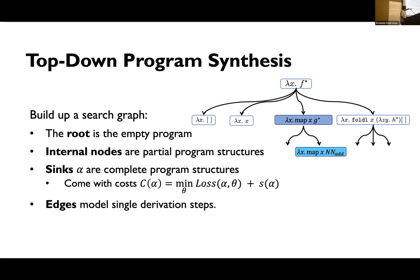In the search tree, internal nodes are partial program structures with holes, and leaf nodes represent complete program structures. For complete programs, you can evaluate the training loss and train the parameters using gradient descent. The edges model individual derivation steps. Your goal is to find a path from the root to a least-cost leaf. Each sub-modification of the program has a unit cost, and the structural cost of a program is the sum of those costs along the search path.